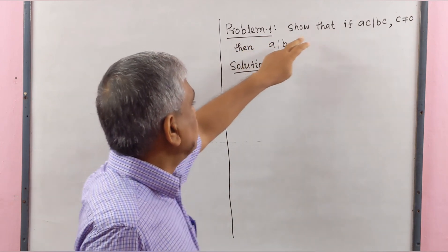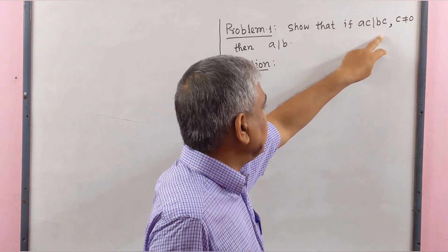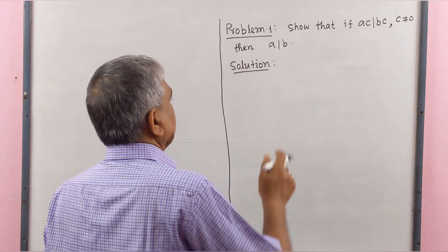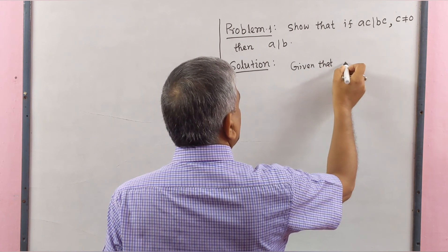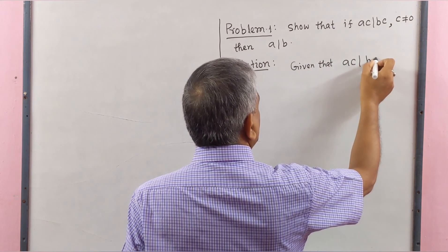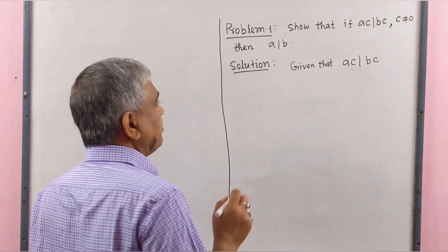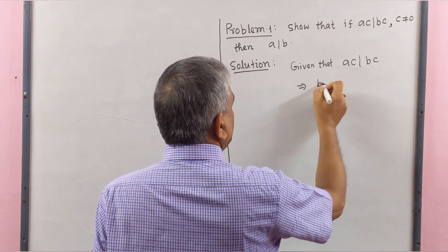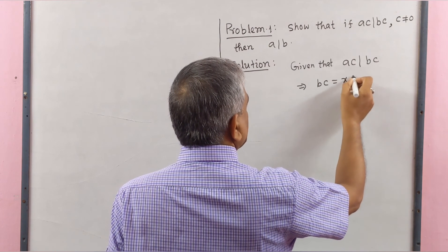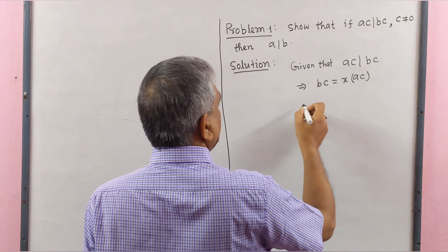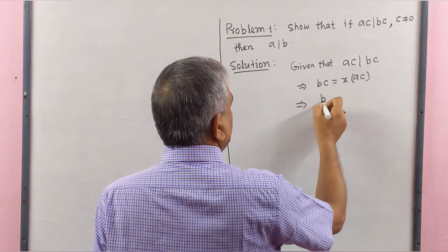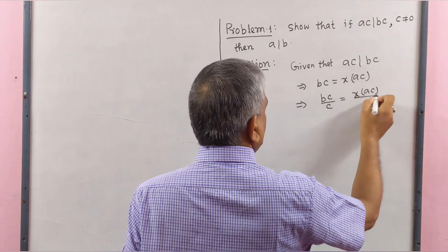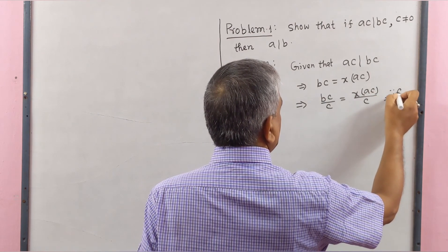Problem number 1: Show that if AC divides BC, with C not equal to 0, then A divides B. Given that AC divides BC, by the concept of divisibility, we get BC equal to X multiplied by AC. It implies that BC divided by C equals XAC divided by C, since C is not equal to 0.